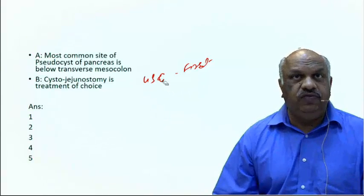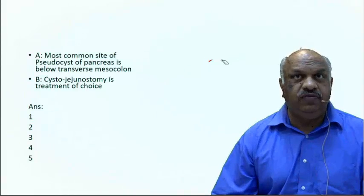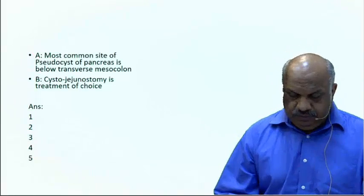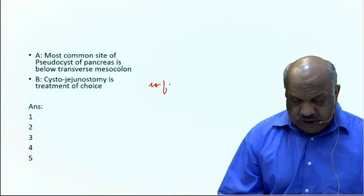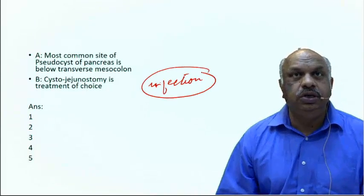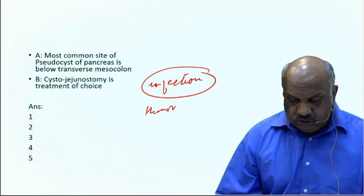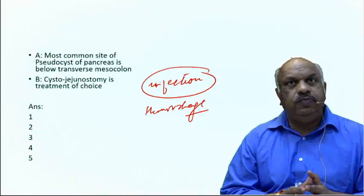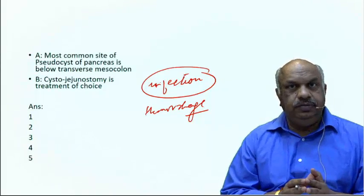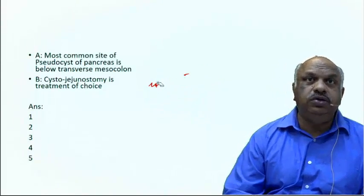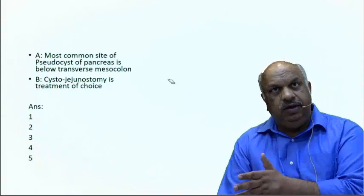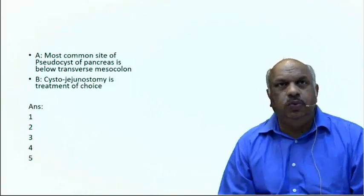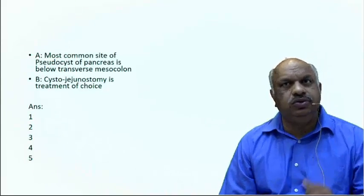Summary: pseudocyst wall forms after four weeks, matures after six weeks, surgery after six weeks, most common site is the lesser sac. The two most common complications are infection — the most common — and hemorrhage inside the cyst. On aspiration, you may find pus or hemolyzed blood from oozing of the wall.